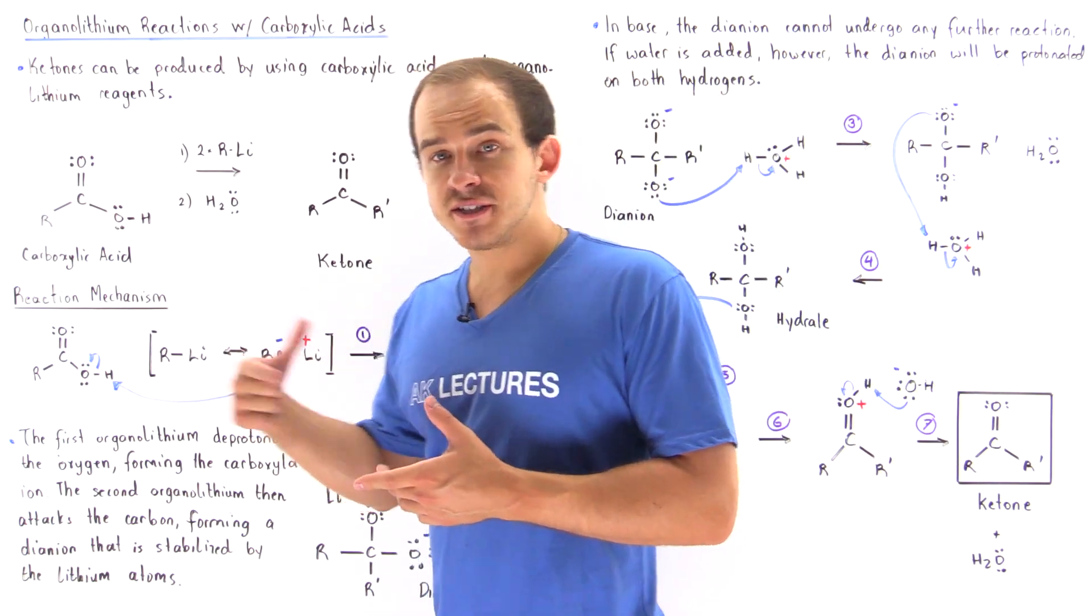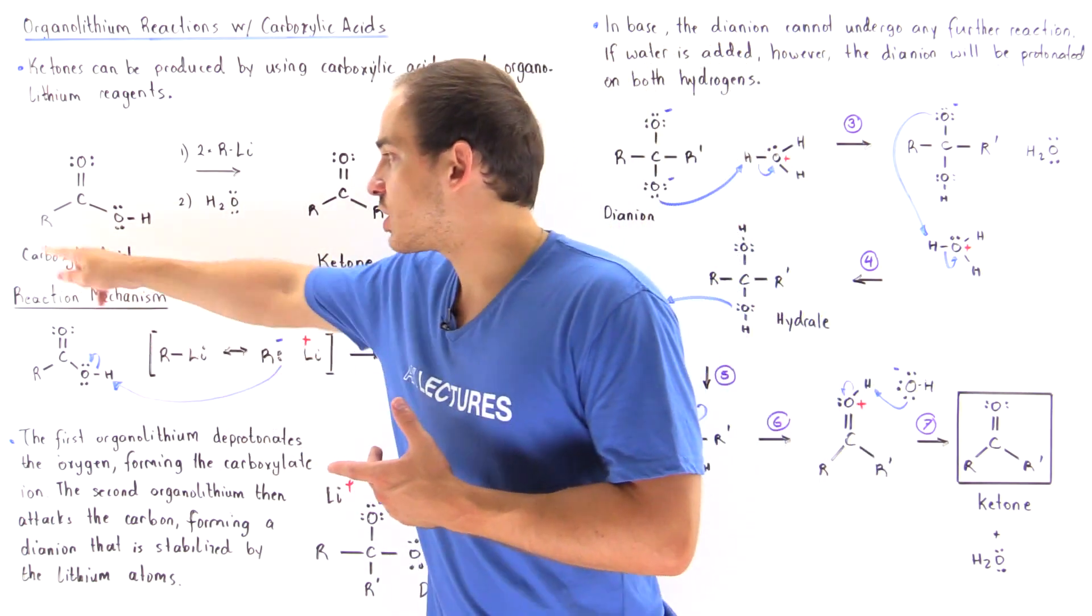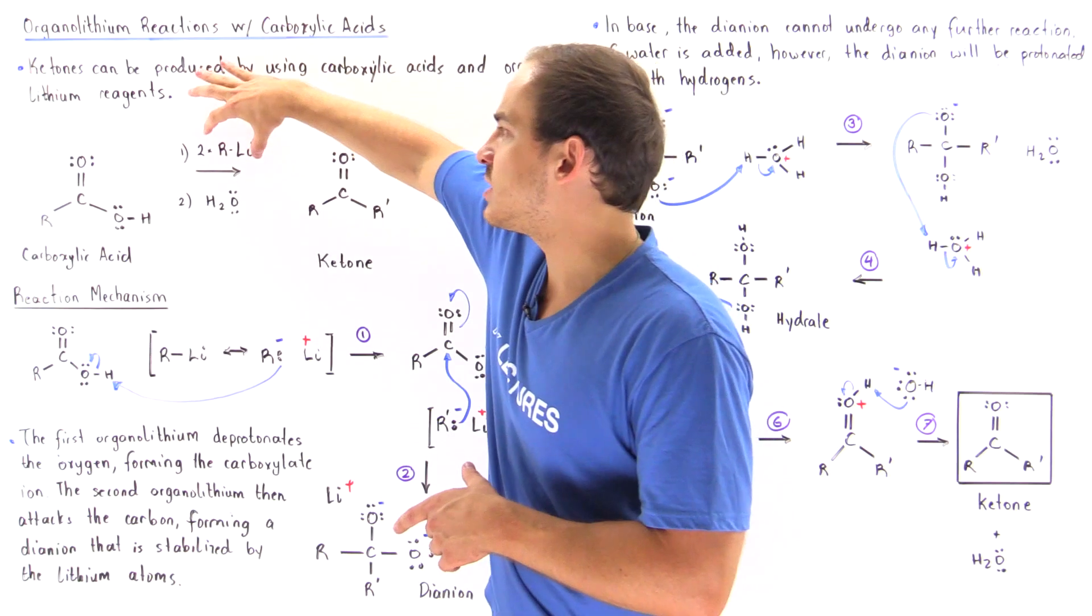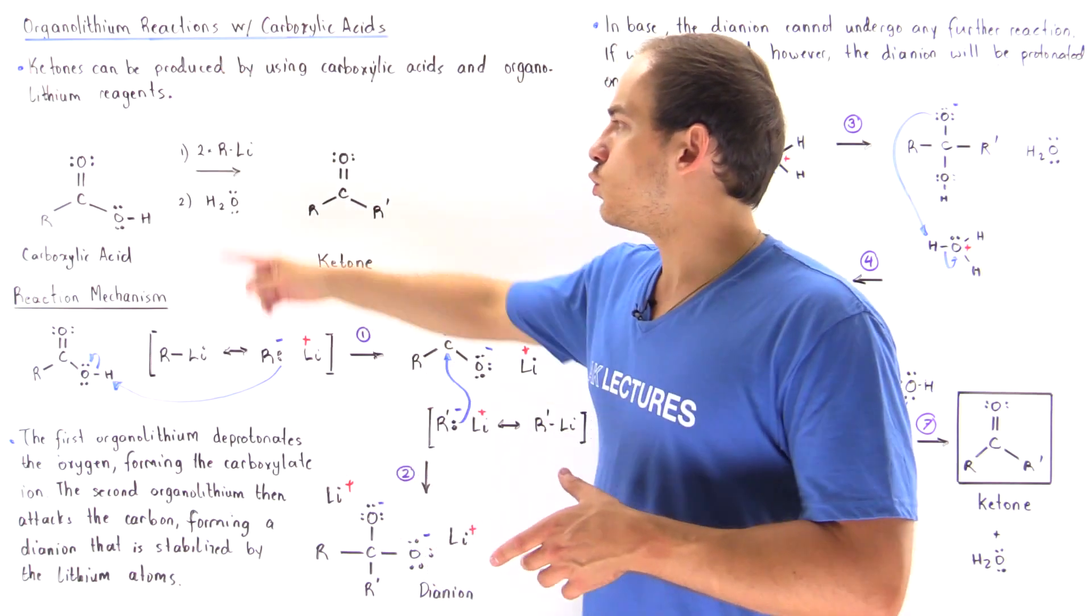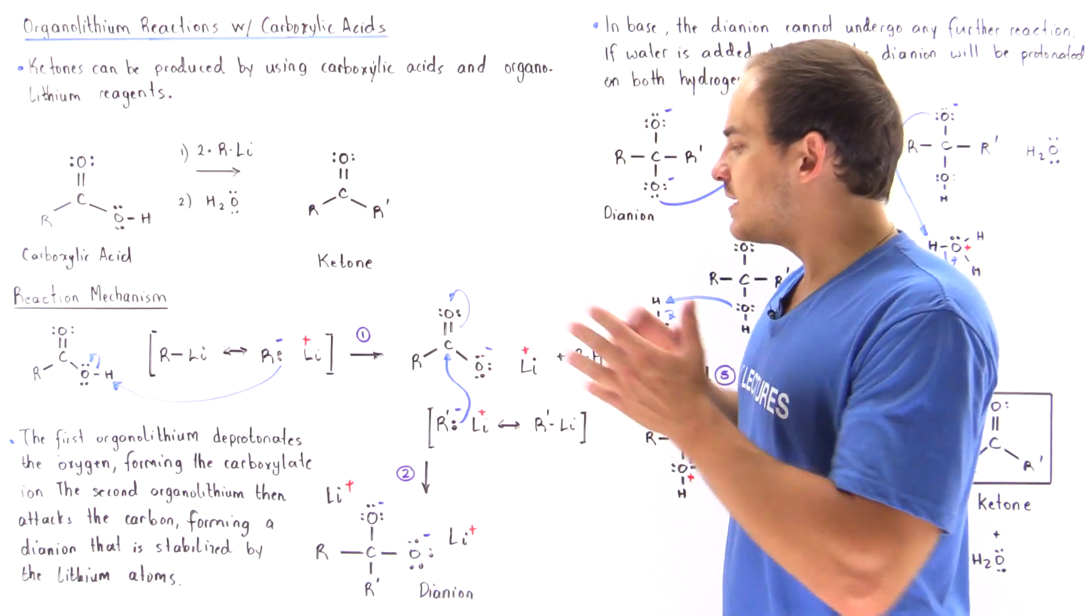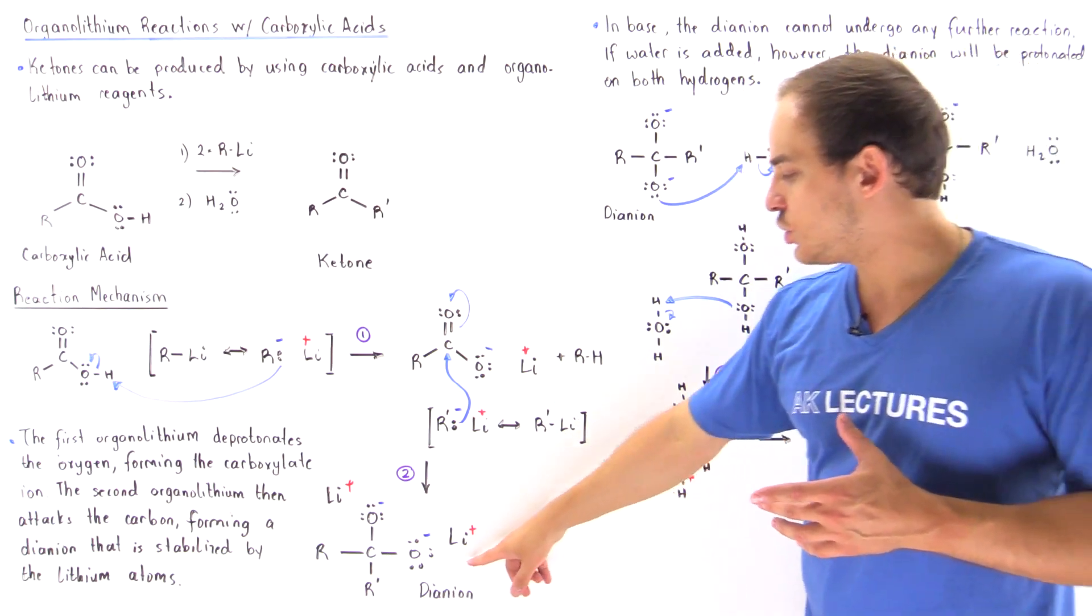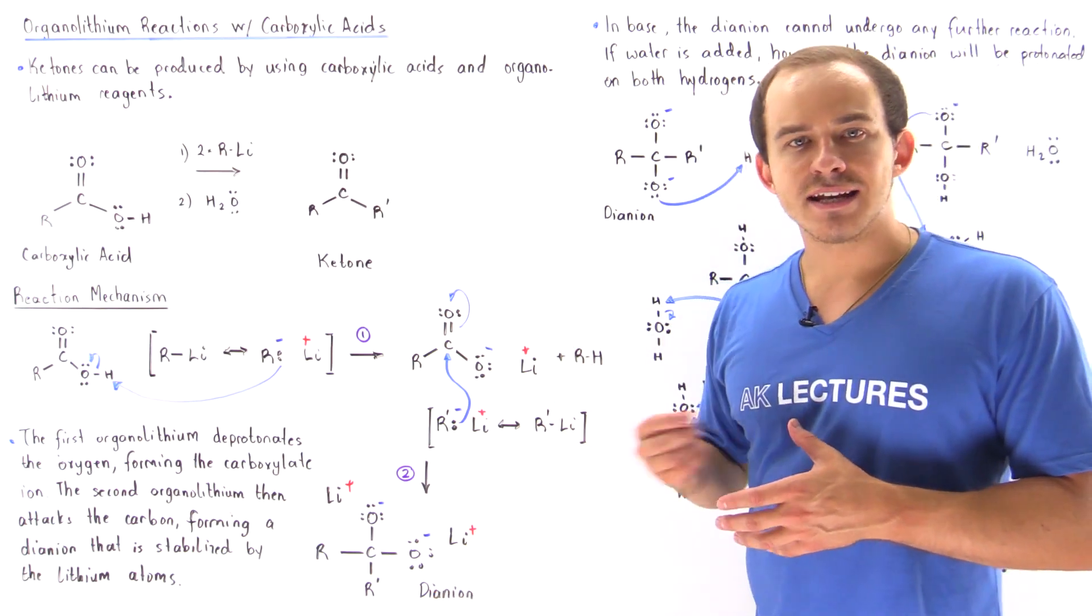In the first series of steps, when we take the carboxylic acid and mix it with two molecules of organolithium reagent, we eventually produce a molecule known as a di-anion.